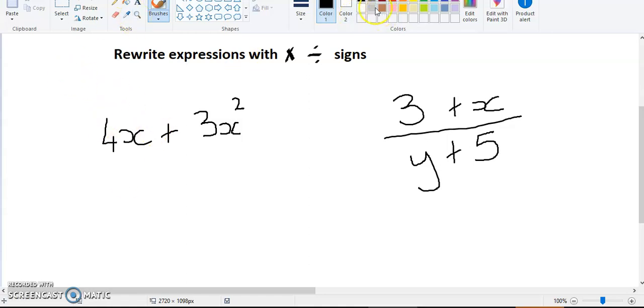So for example, I can expand it as 4x is 4 times x plus 3. It's times in with x but it's x squared which means it's times x times x.